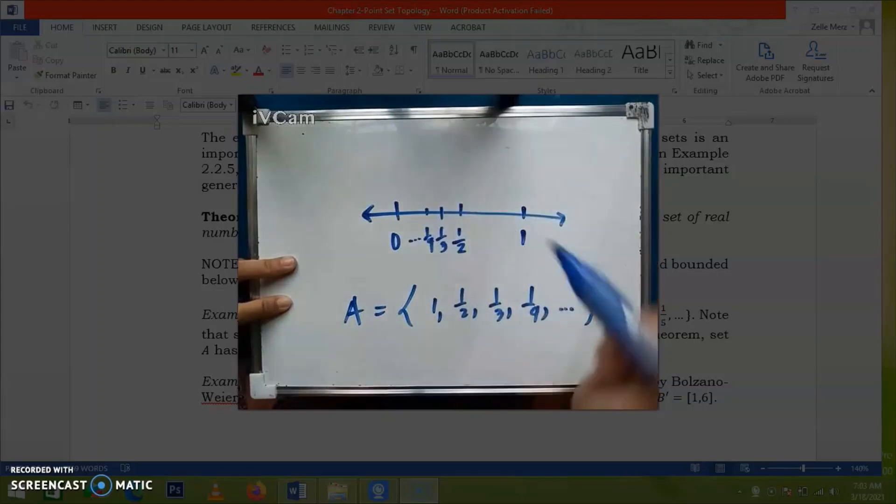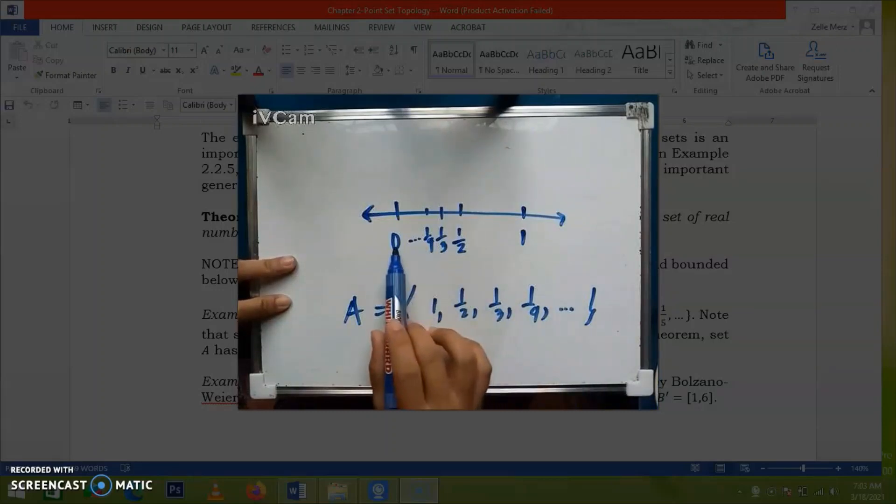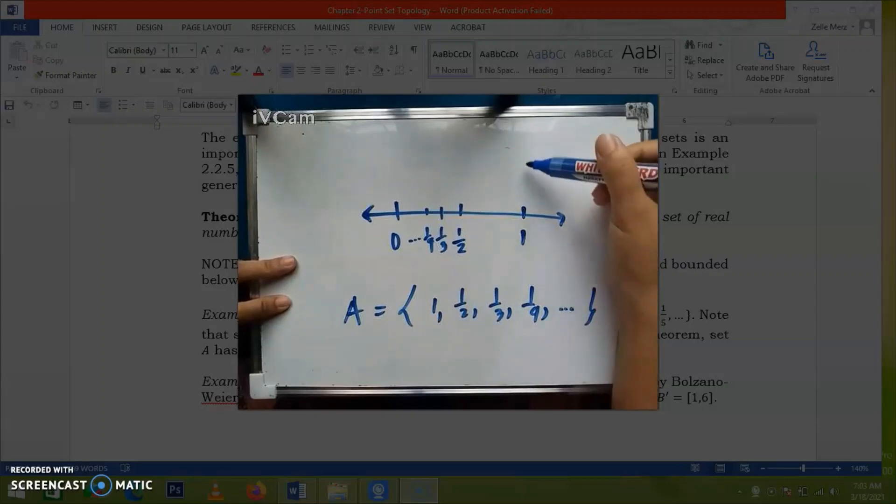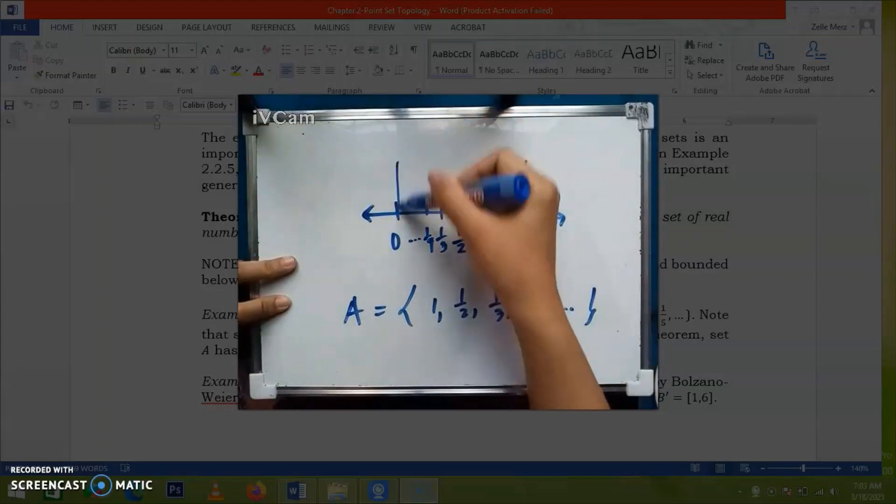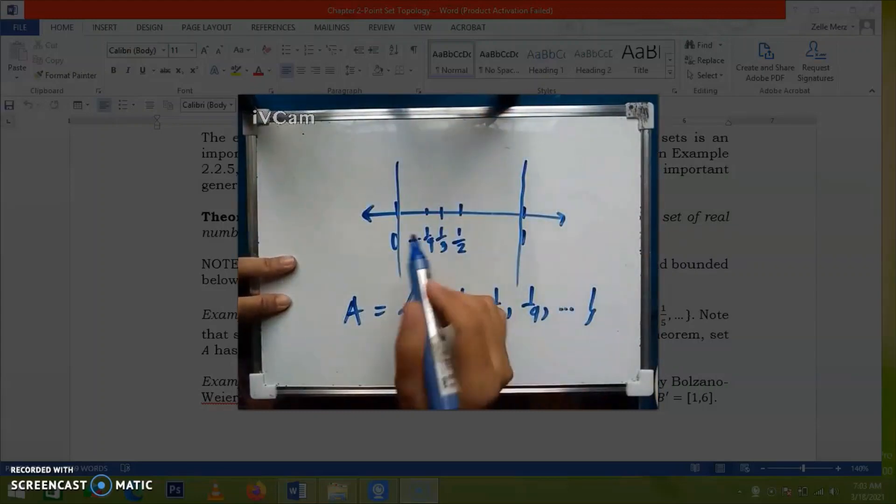Notice that the points in the set approach to zero. And as you can see here in our illustration, the set is bounded above and bounded below. And of course, the set is infinite. The points approach to zero. Hence, the set is bounded and infinite.